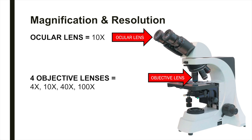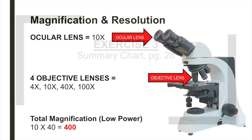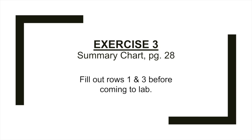For example, if you're using the low power objective lens, the total magnification would be 400, or 10 times 40. Throughout exercise three, you'll be filling out a summary chart on page 28. Flip to your summary chart and fill out rows one and three.